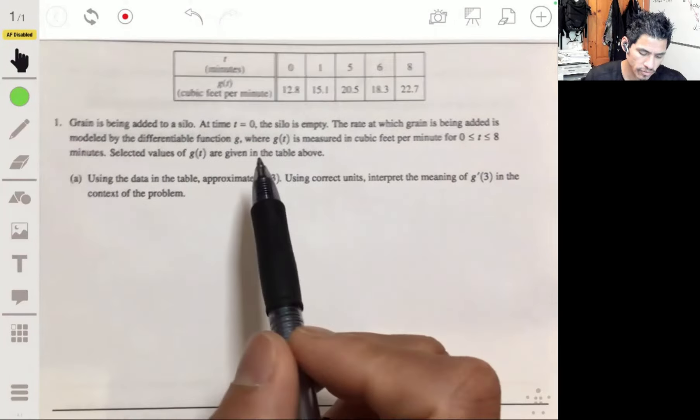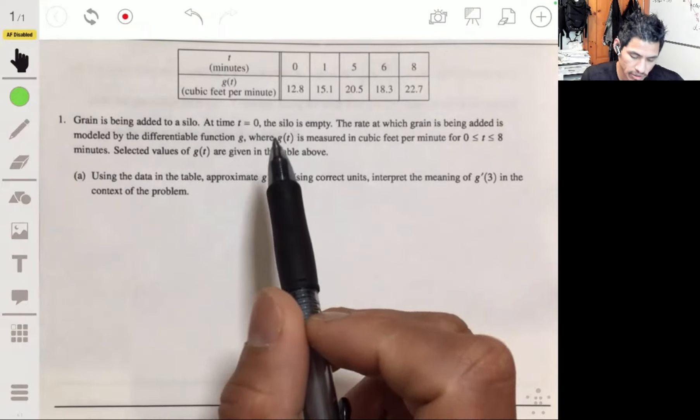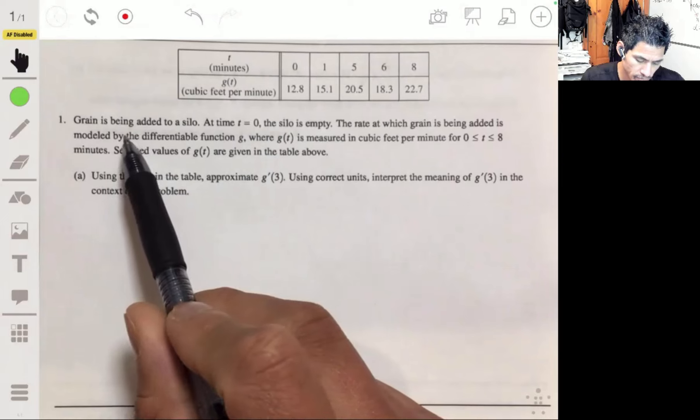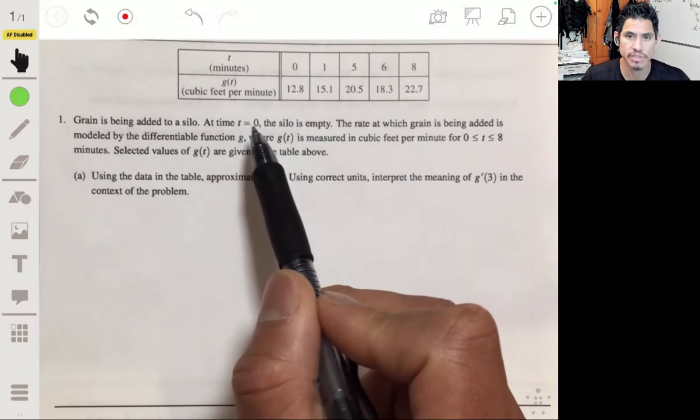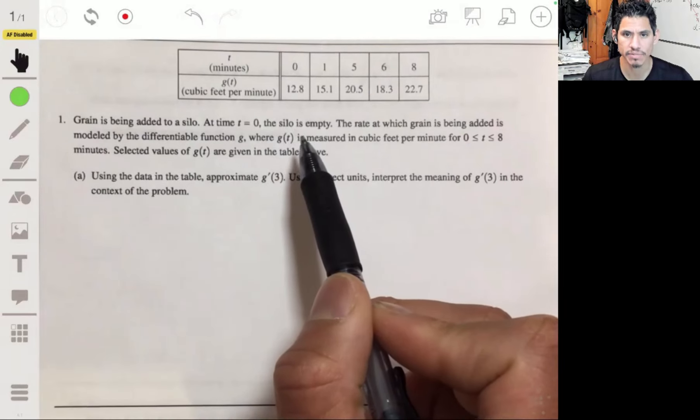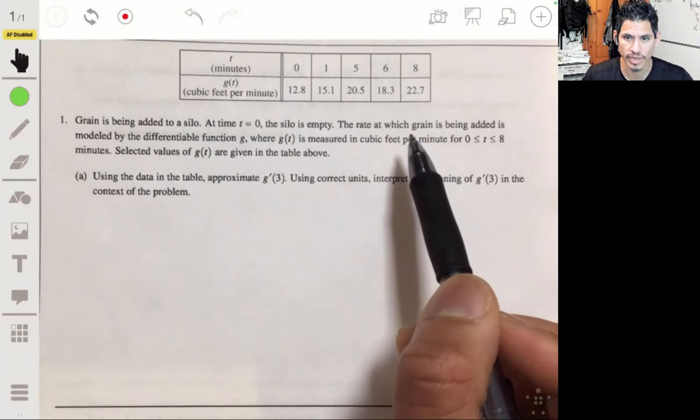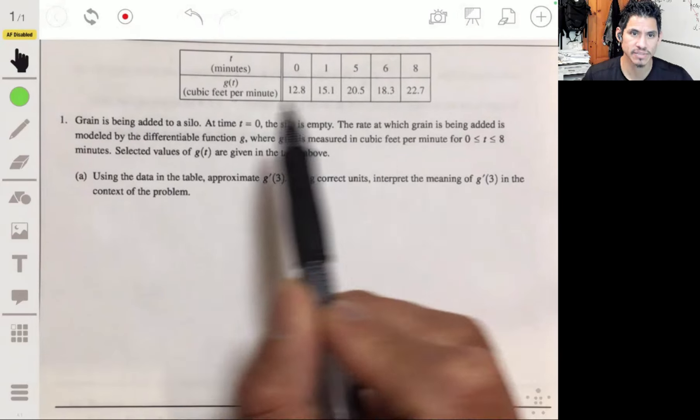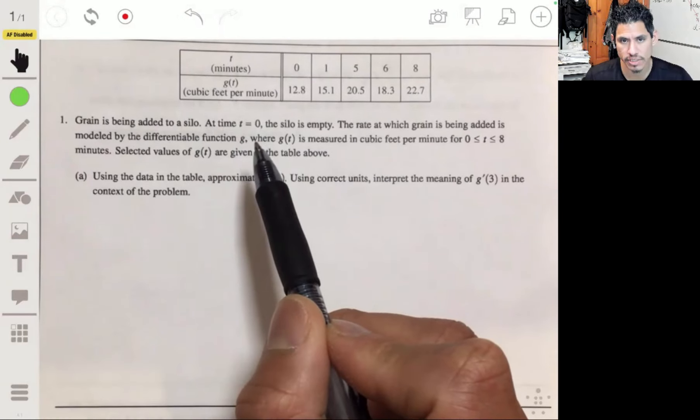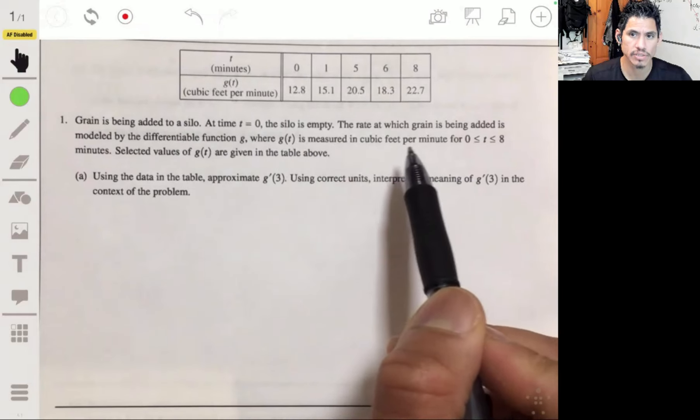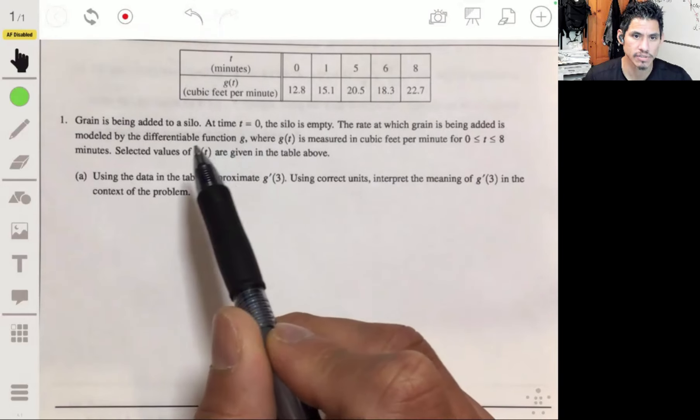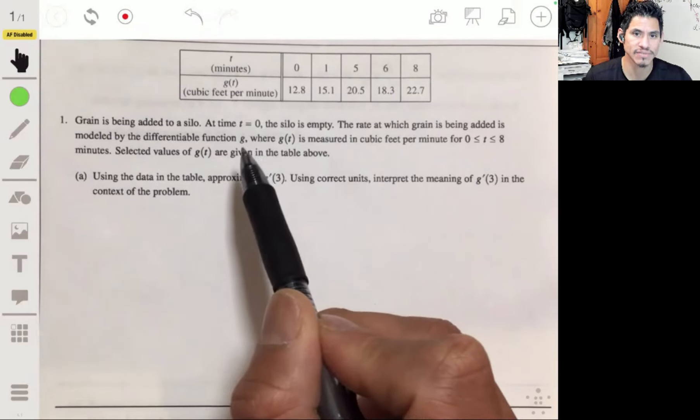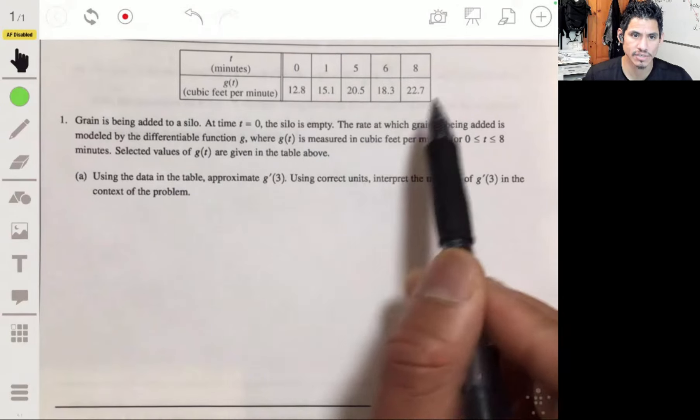All right, going over problem one from the 2018 AP Calculus exam. We have that grain is being added to a silo, and at time t equals zero, the silo is empty. The rate at which grain is being added is modeled by the differentiable function g, where g of t is measured in cubic feet per minute for t between zero and eight minutes. And here are some selected values of g of t given in this table.